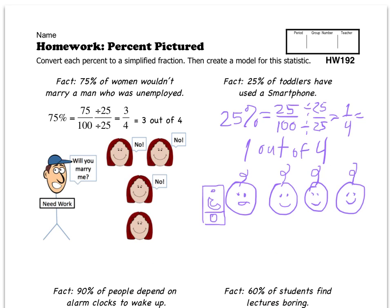You've got 1 toddler out of 4 total that has used a smartphone — 25% of all toddlers. For the bottom two problems, you're going to write it as a percent, then as a fraction with that number over 100, find the greatest common factor, divide top and bottom by it, and end up with a simplified fraction written out as an English sentence. Then model it. We don't just want figures crossed out — we want thoughtful modeling so people can look at the picture and understand what it represents. Then let's move on to the next slide.